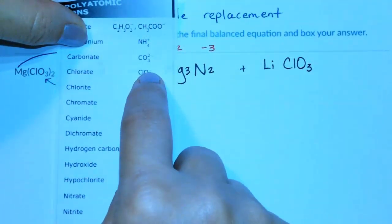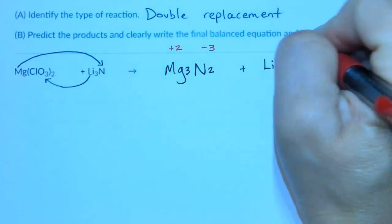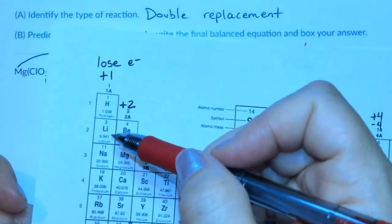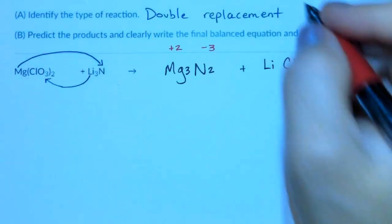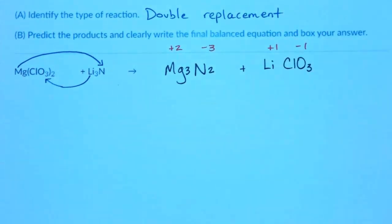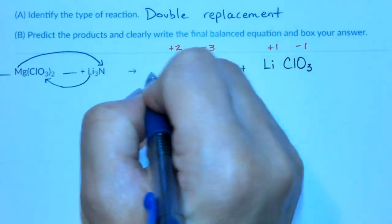Notice that it has a charge of negative 1. And then lithium has a charge of positive 1. So plus 1 versus minus 1 are going to balance and cancel with one another. And so now this is finished. I can now balance the coefficients.